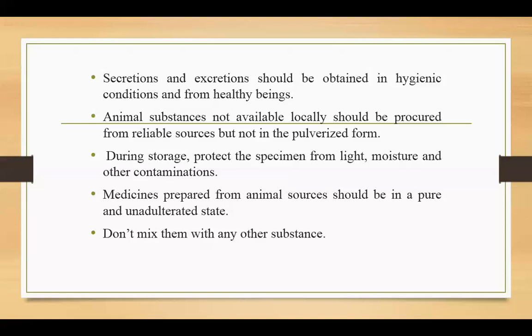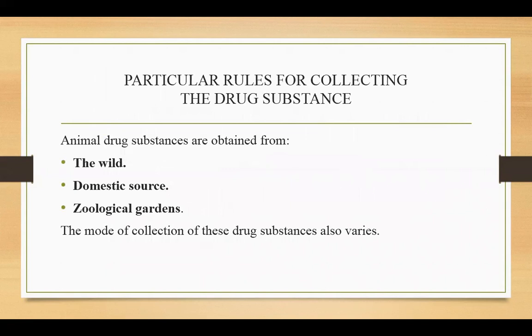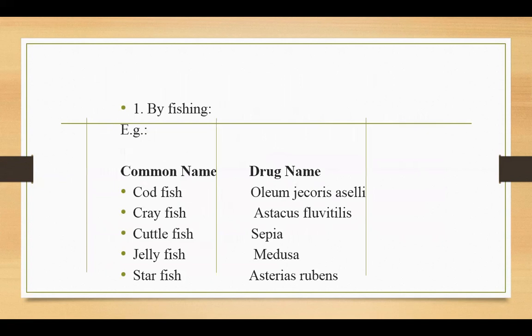Particular use for collecting the drug substance: animal drug substances are obtained from the wild, domestic, social, and ecological gardens. The mode of collection of these substances also varies. By fishing: